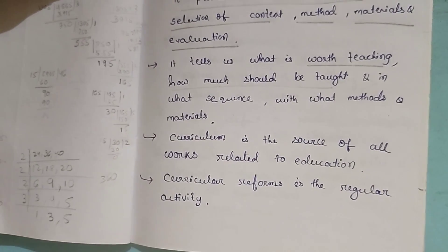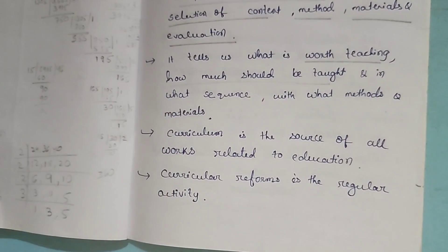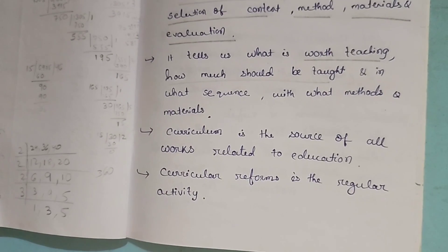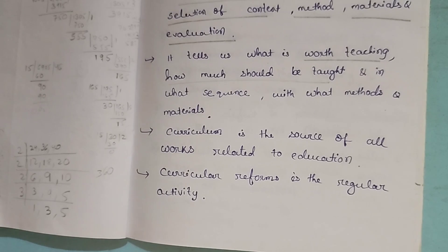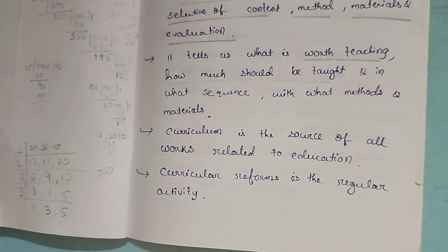For example, we are studying math. We are studying numbers like addition, subtraction, multiplication, division. We are studying first about natural numbers, whole numbers, odd numbers, even numbers. Then we will go to what? Integers, right?